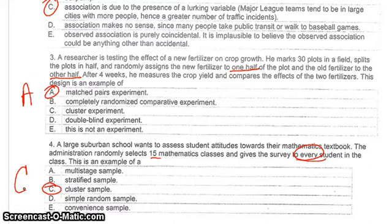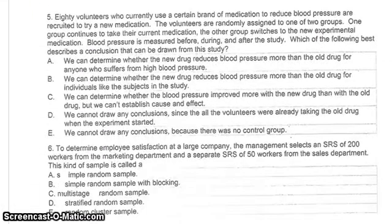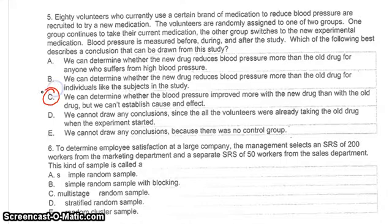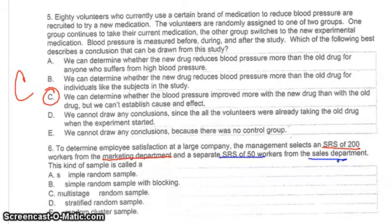Number five: 80 volunteers, using random assignment, measuring blood pressure before, during, and after, switching treatments. The answer is C — we can show cause and effect. Number six: SRS from marketing and SRS from sales — those are different groups, so think stratification. That's D.